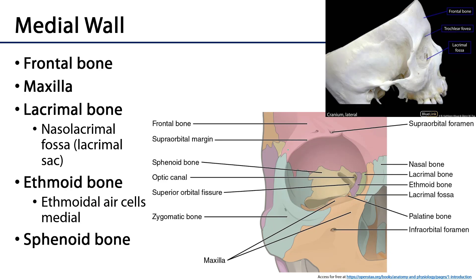The medial wall has the greatest contribution from different bones. Superiorly there is a small contribution from the frontal bone, then from most anterior to most posterior inferiorly we have the maxilla, the lacrimal bone, the ethmoid, and then a little bit of the sphenoid bone.